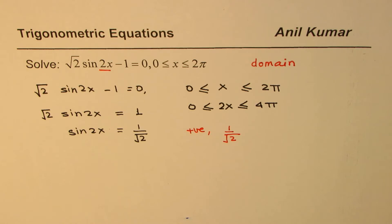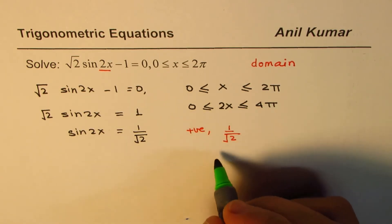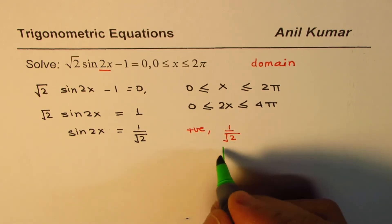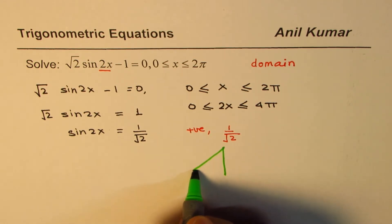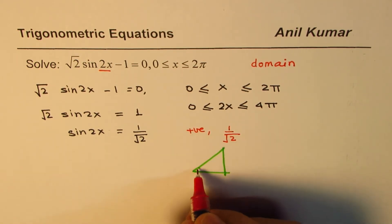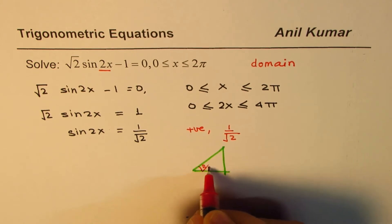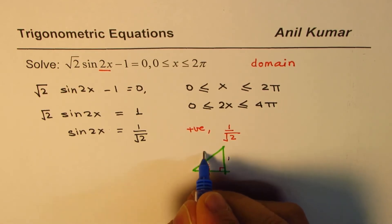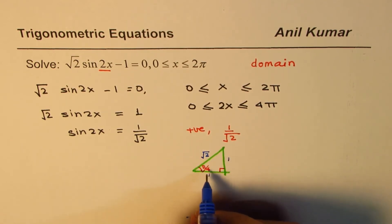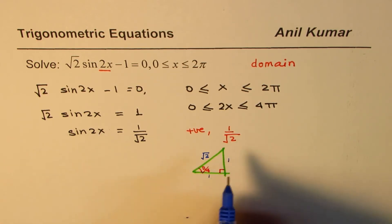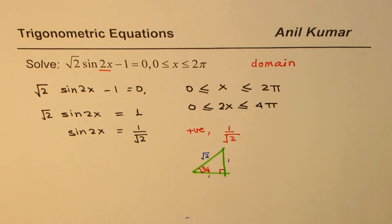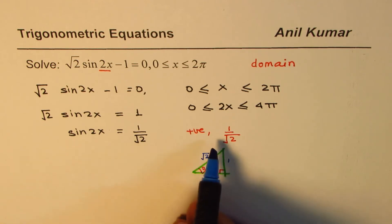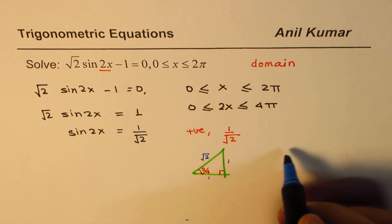Let me sketch a special triangle here — 45 degrees or π/4. The special triangle which meets this criteria is the one in which the angle is π/4. The legs are 1 and 1, and the hypotenuse is √2. So at π/4 we know sin(θ) = 1/√2. The second thing we need to concentrate on is when sine is positive.